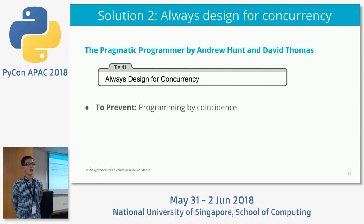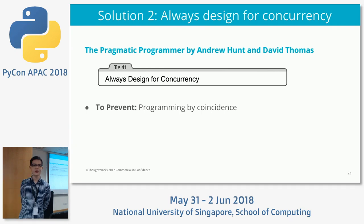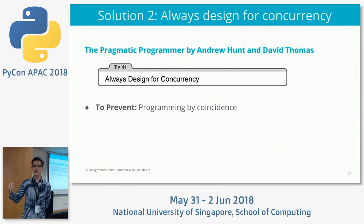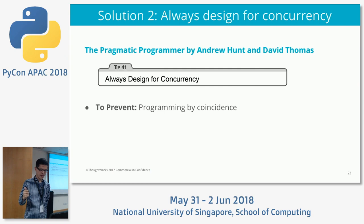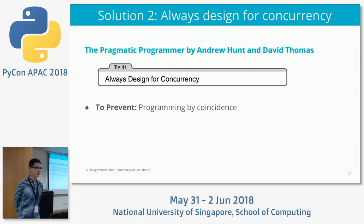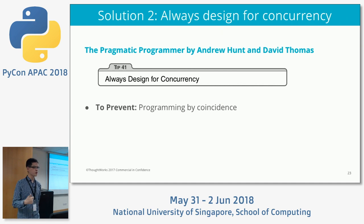Without the lock, what do we do? Solution 2: always design for concurrency. There's a very good book, 'The Pragmatic Programmer' by Andrew Hunt and Dave Thomas, where Tip 41 says 'always design for concurrency' to prevent programming by coincidence. Programming by coincidence means your code works for one scenario but not for others — and more often than not that other scenario is concurrent code. In that book they say designing for concurrency means you need to encapsulate and watch out for your state. There are two ways: follow the principle of functional programming — no shared state and no side effects — or modify your state so that it's idempotent.